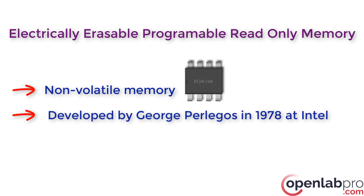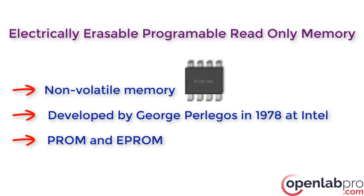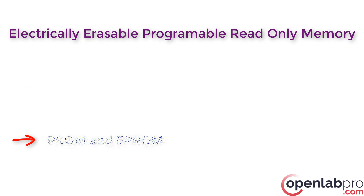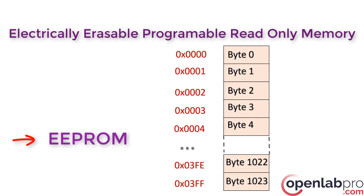The EEPROM was developed by George Perligos in 1978 at Intel. EEPROM can be used as a replacement for PROM, that is programmable read-only memory, and EPROM, erasable programmable read-only memory. EEPROM performs read and write cycles very slowly as compared to the read and write cycles of PROM.